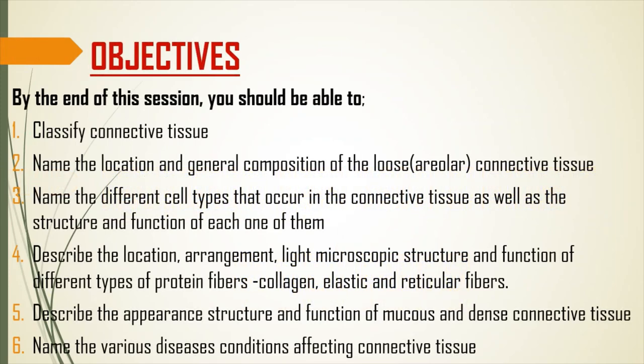The objectives for today's lesson: by the end of this session you should be able to classify connective tissue, name the location and general composition of loose connective tissue, name the different cell types that occur in connective tissue as well as the structure and function of each one, and describe the location, arrangement, light microscopic structure and function of different types of protein fibers.